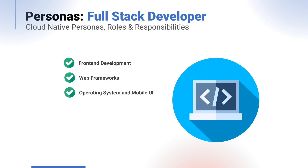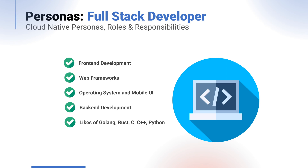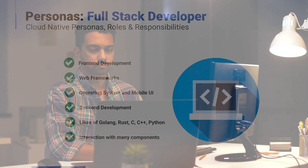Back-end development could be your server-side processing that the application interacts with, possibly through the use of secure API calls. Common examples include Golang, Rust, C, C++, and Python, and it's common for these systems to have interaction with other components such as data stores, databases, or other services. As a full-stack developer, they will typically be proficient in a variety of different software development areas and are able to complement projects with the interaction between front-end and back-end components.